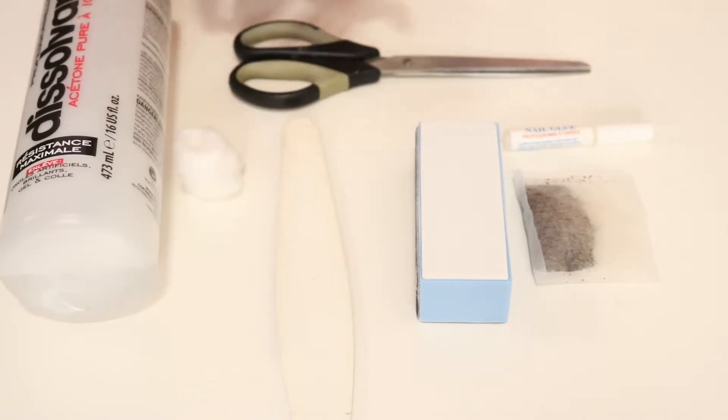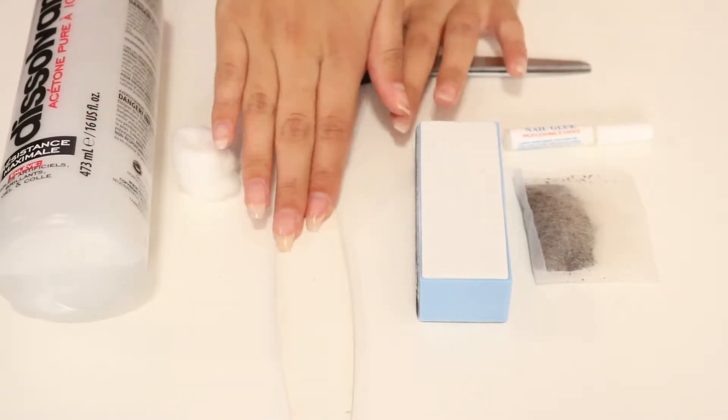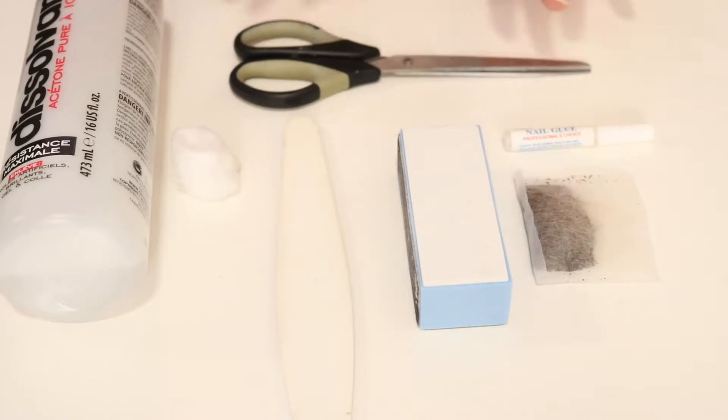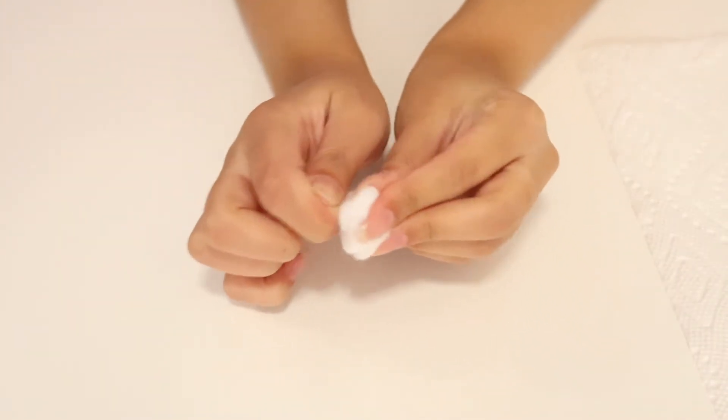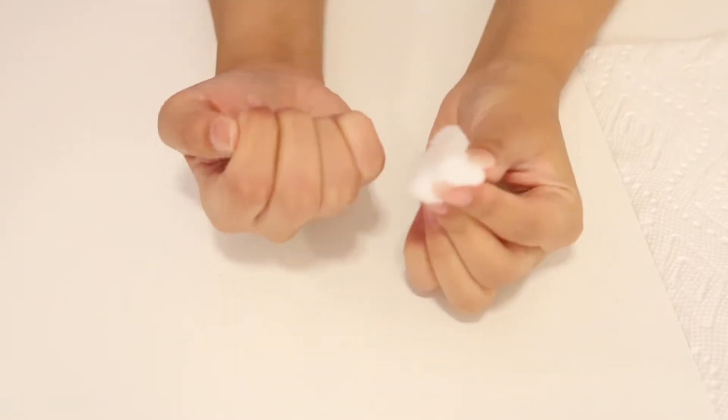All you're going to need is some nail polish remover to remove any existing nail polish. You're going to need a file, a buffering block, a pair of scissors, a tea bag, and nail glue. So I am just starting off by removing the clear nail polish I had on.